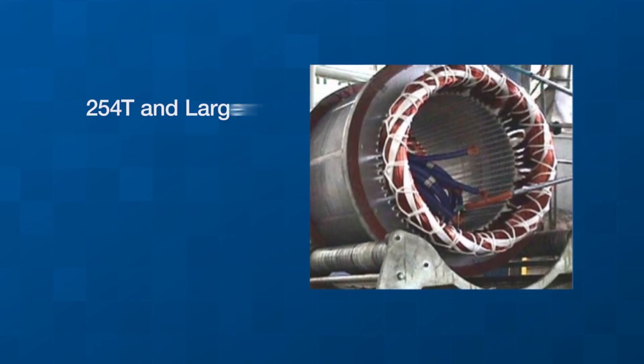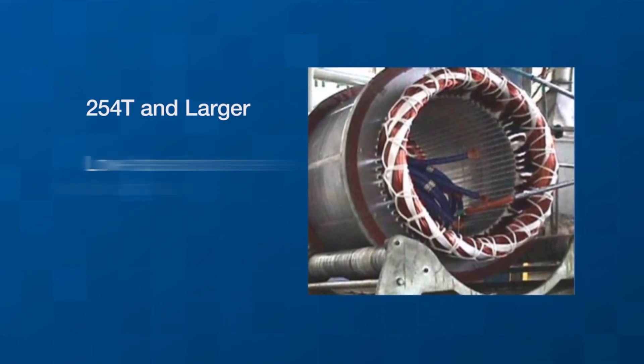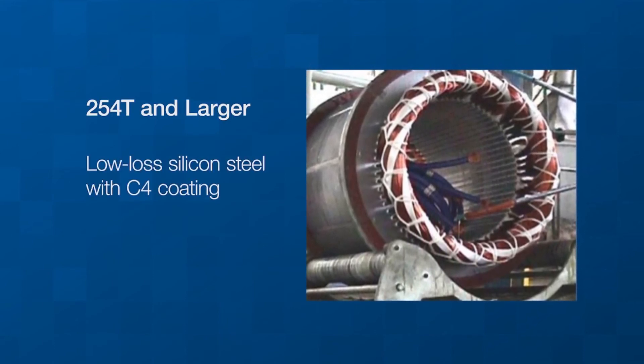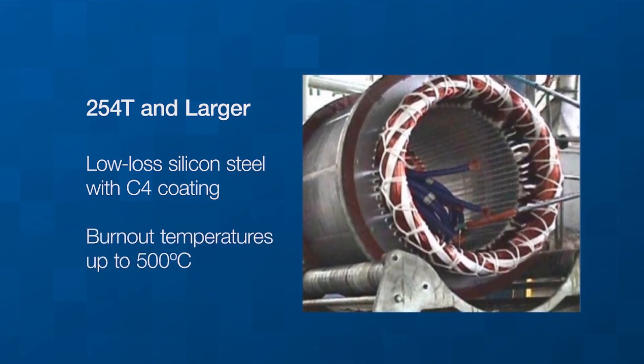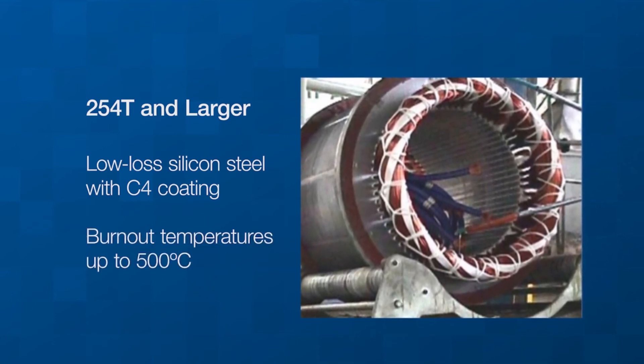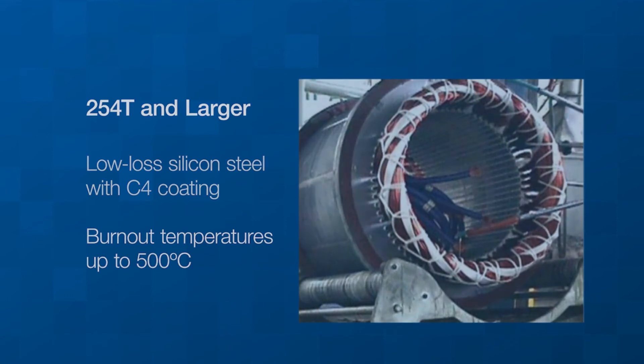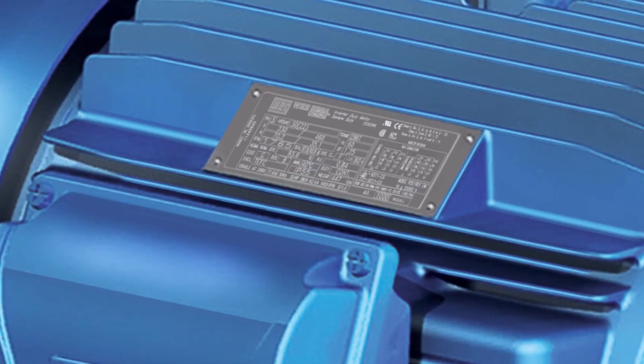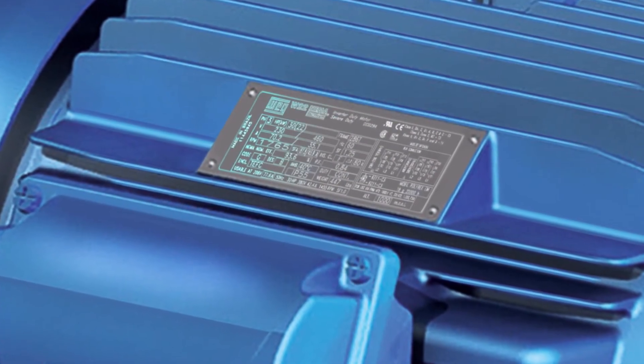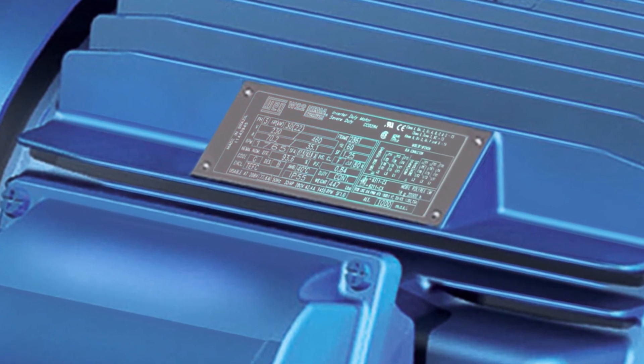Stator core steel on frames 254T and above use low-loss silicone steel with C4 coating, which allows for burnout temperatures up to 500 degrees Celsius without efficiency impact during a rewind. A drain plug, positioned at the lowest level, allows condensed water to drain from the motor. The stainless steel nameplate includes Division 2 and VFD data along with lubrication intervals.